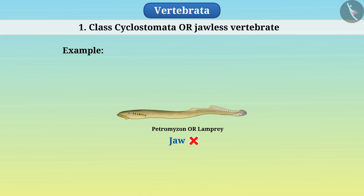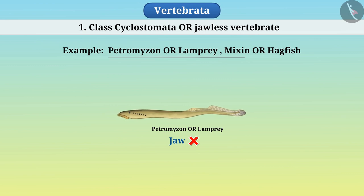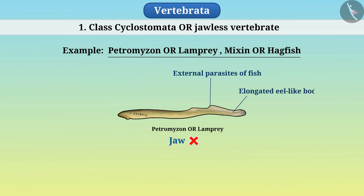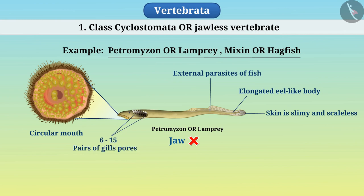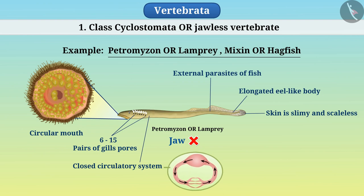For example, Petromyzon or lamprey and Myxine or hagfish. All these are external parasites of some fish. They have an elongated eel-like body. The mouth is circular and the skin is slimy and scaleless. They have 6–15 pairs of gill pores for respiration and have a closed circulatory system.